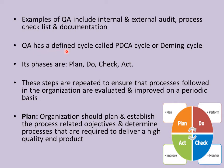Quality assurance has a defined cycle called the PDCA cycle, or Deming cycle. PDCA stands for Plan, Do, Check, and Act. Plan means to plan something to assure the quality of the product; Do means to perform those measures; Check is to monitor; and Act is to improve the quality of the product.